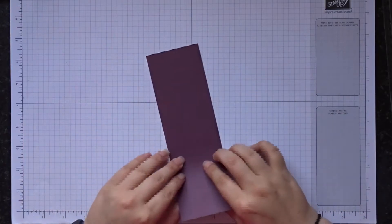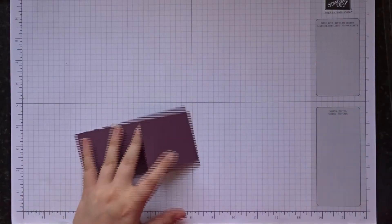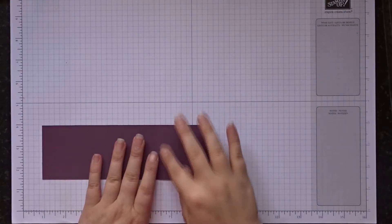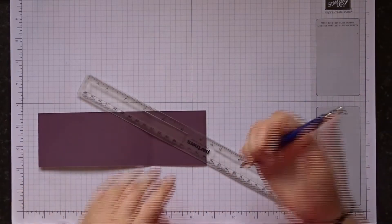We're then going to fold and burnish that score line and the next thing we need to do is put the hole in the middle so we can put it over our wine bottle. So I'm just going to use a bit of a trick I'll use.